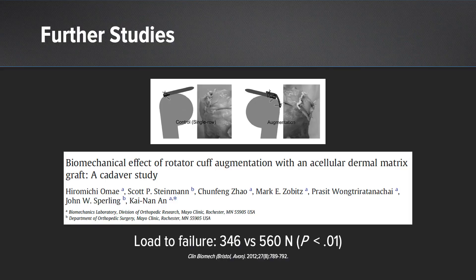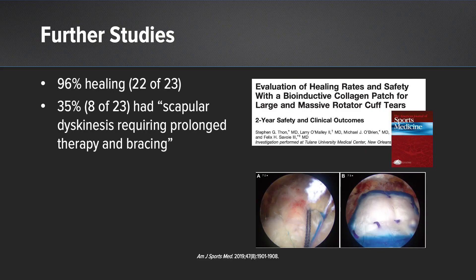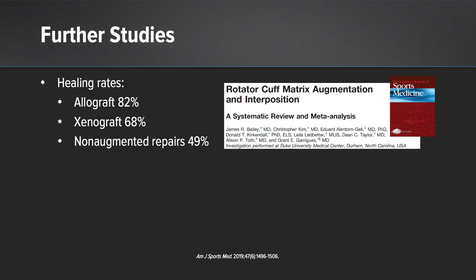Regarding biomechanics, a Mayo Clinic study published several years ago found that load to failure of a rotator cuff repair is improved with dermal allograft augmentation, and other studies have had similar findings. A retrospective study on massive rotator cuff repairs compared 54 conventional repairs to cases using a dermal allograft patch, finding 81% healing compared to 54% without. On the xenograft side, signs of inflammatory reactions also bear out — one study by Buddy Savoie showed 96% healing, but 35% of patients had scapular dyskinesis requiring prolonged therapy and bracing. Overall, systematic review shows the highest healing rates with allograft, followed by xenograft, then non-augmented repairs.